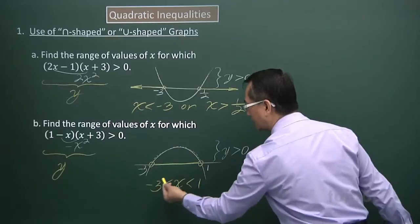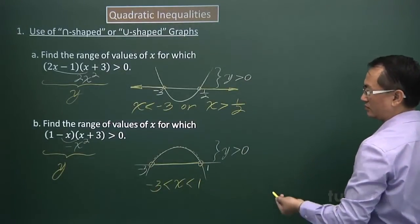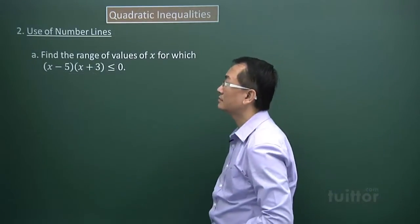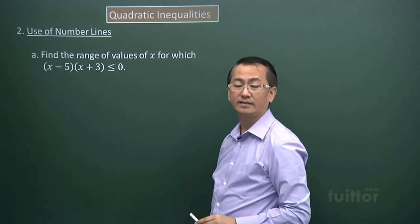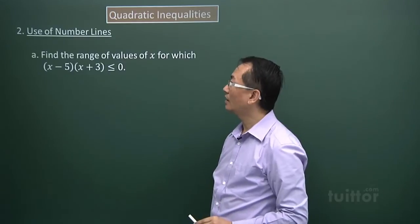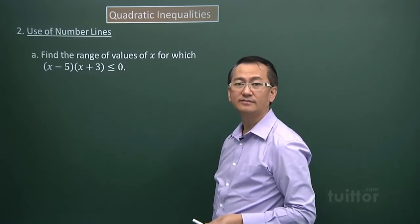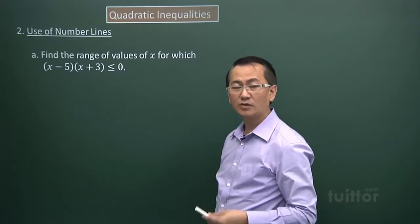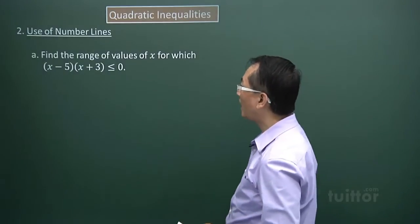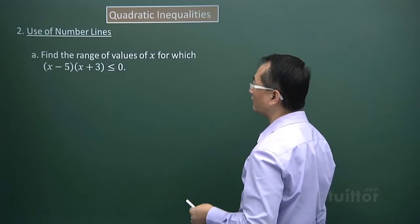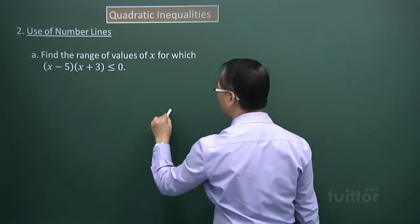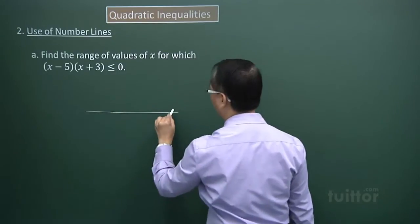That is the range of X values for Y greater than zero. Now we look at the use of the number line instead of the U-shaped or inverted U-shaped graphs. These two methods are really to get the inequalities involving X or any other variable. For part a, we are looking for the range of values of X for which we have these inequalities, and the first thing to do is to get the number line going.